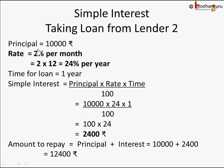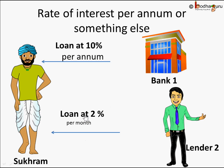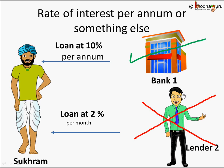So it looked very attractive at 2%, but the important thing is it was not 2% per annum - it was 2% per month. Because of that you need to pay 12,400 rupees at the end of the year, whereas with Bank 1 you only pay 11,000 rupees. So which one should you choose? Don't just go by the face value of 2% vs 10% and pick the lesser number. Are you comparing apples to apples? Are the terms the same - 10% per annum vs 2% per month? Sukram should choose the first option only.